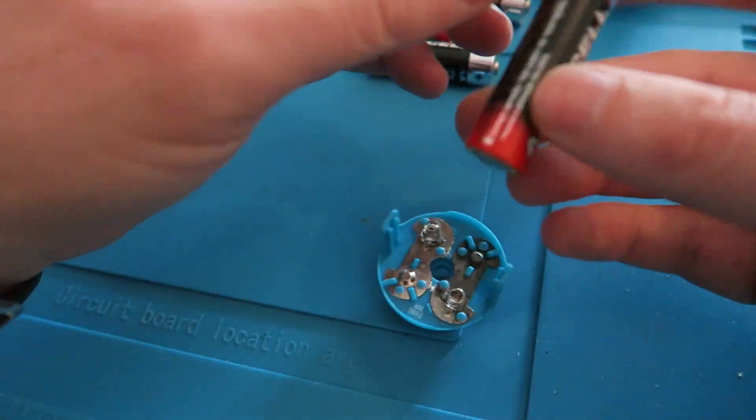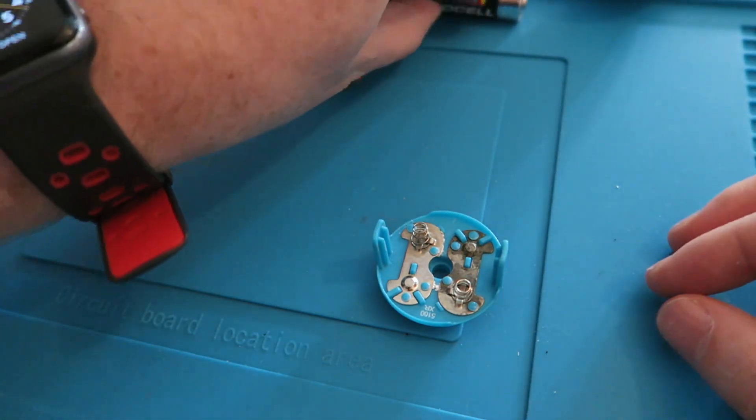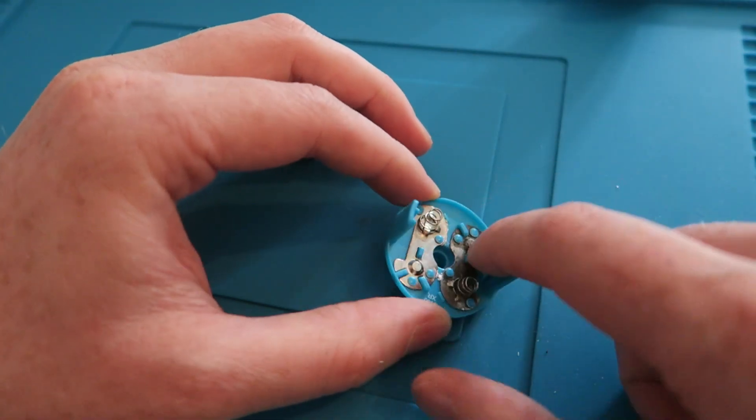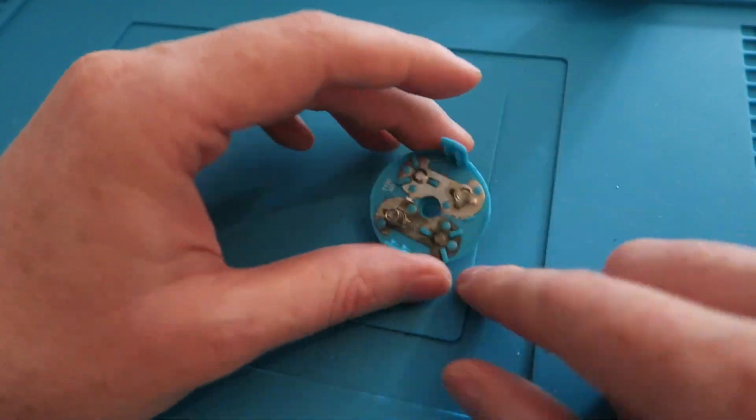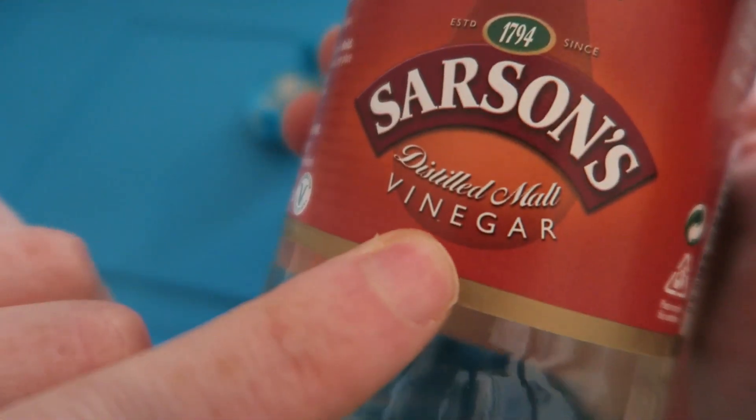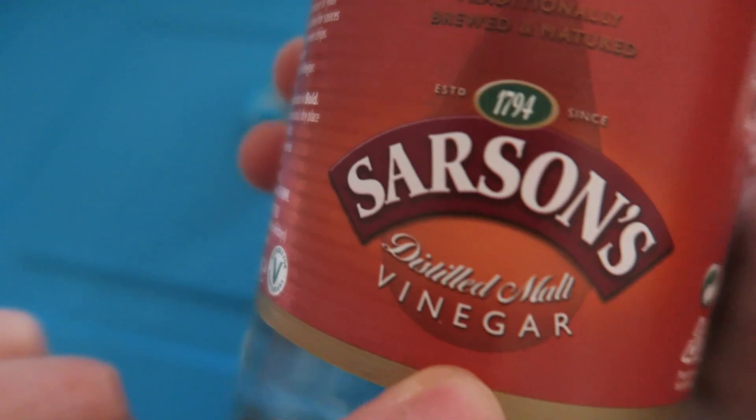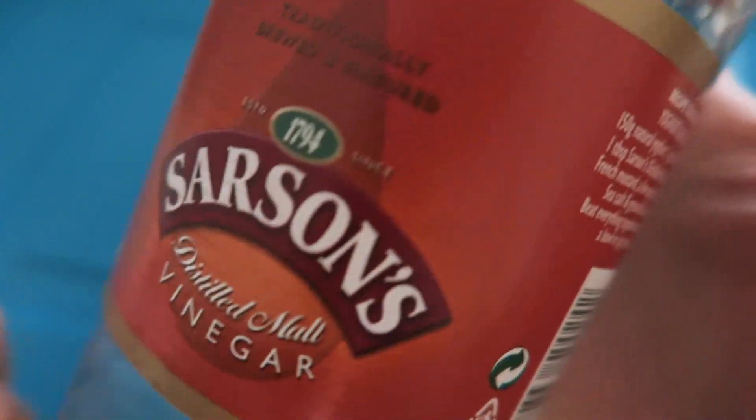Now the batteries that are used in this are like these alkaline AA batteries. So the best thing to do first is to neutralize the alkaline on here, and the best way to neutralize alkaline is with acid. And what I like to use is just this white vinegar. I'm going to pour a tiny little bit in the cup because we really don't need much.